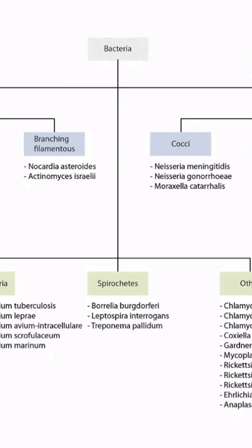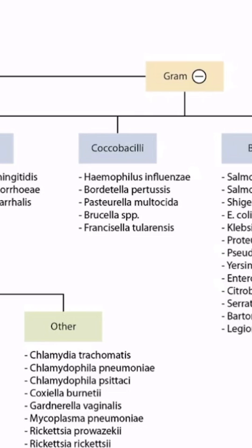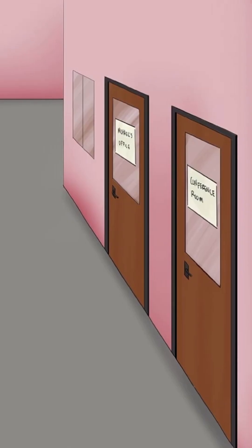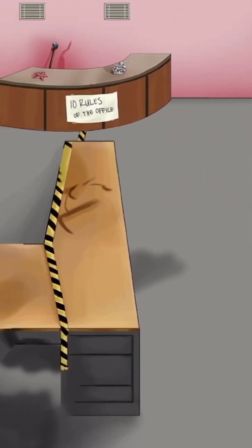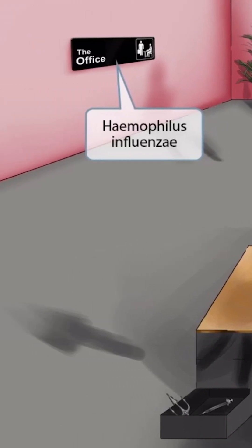This is our bacteria overview figure, and in this video, we'll be discussing Haemophilus influenzae, or H. flu, which you can see right here. This scene will take place inside of an office, as you can see by the desks and the prominent sign that says the office. Office sounds like Haemophilus, so it will be our symbol for Haemophilus influenzae.